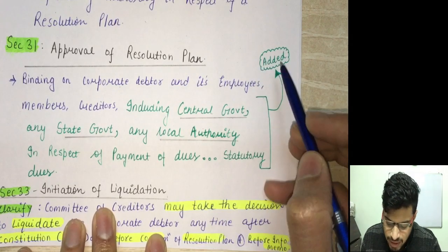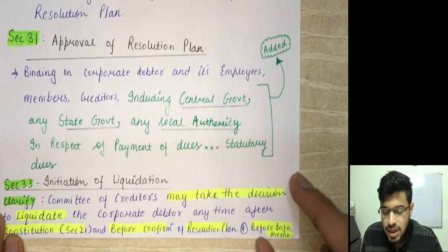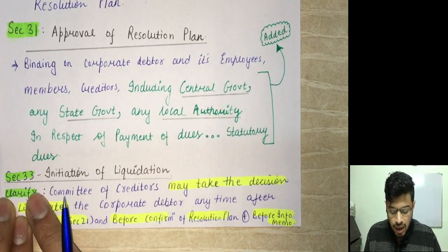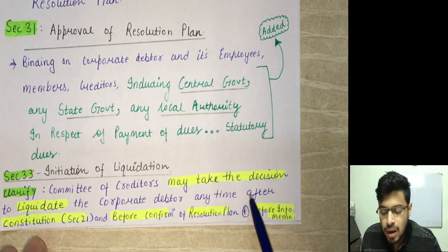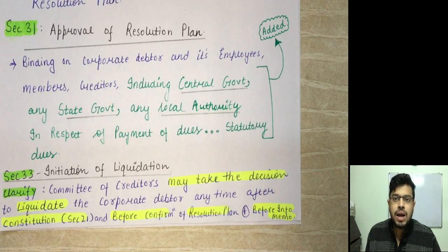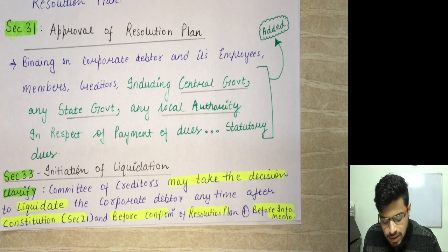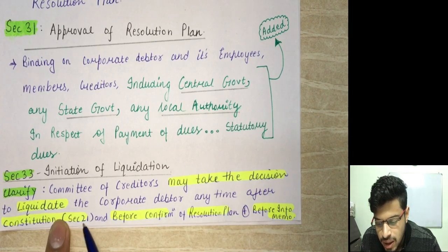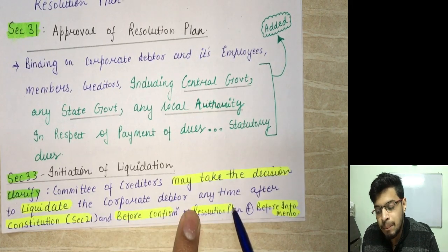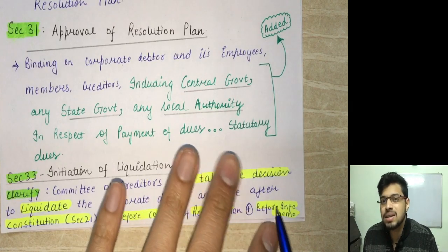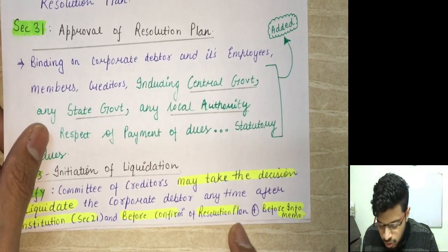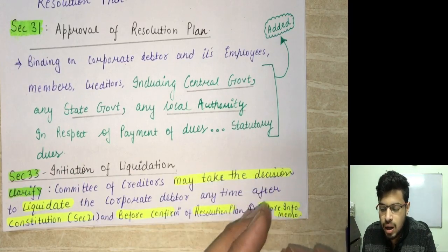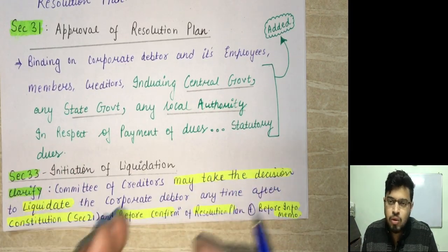Section 33 deals with initiation of liquidation. The clarification added is that the committee of creditors may take a decision to liquidate the corporate debtor at any time — after constitution of the committee under section 21 and before confirmation of the resolution plan. So any time between constitution of the CoC and before the resolution plan is confirmed, the CoC can decide to liquidate.